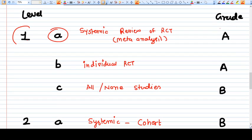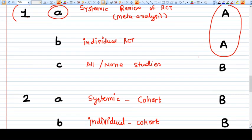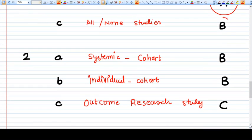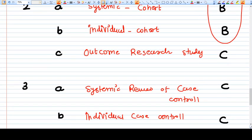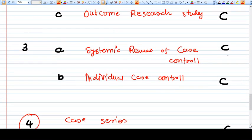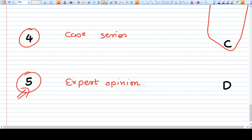Grade 1a and b are described as grade A. Level 1c, 2a and 2b are described as grade B. Level 2c, 3a, 3b and 4 are described as grade C. And the fifth, the lowest important evidence, level 5, is described as grade D.